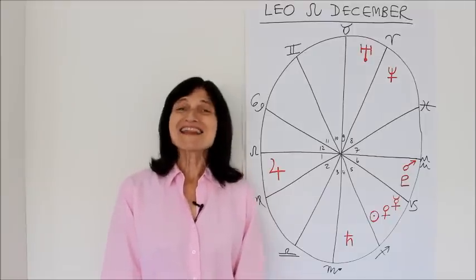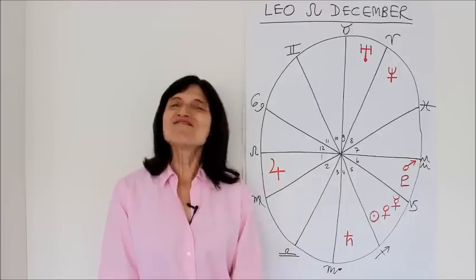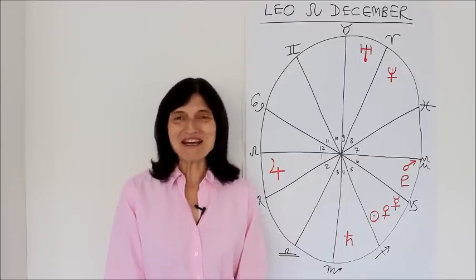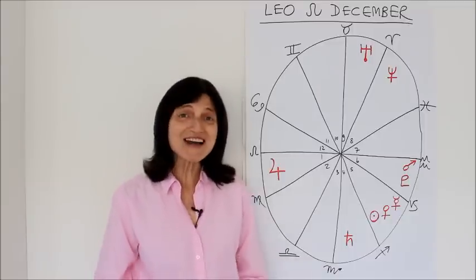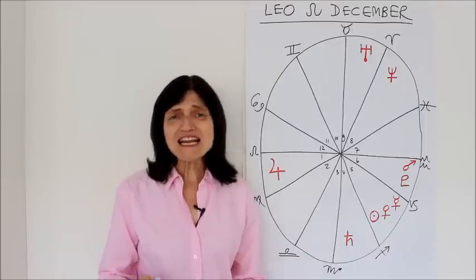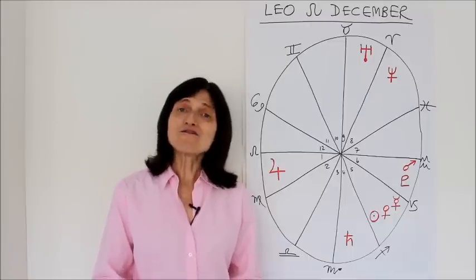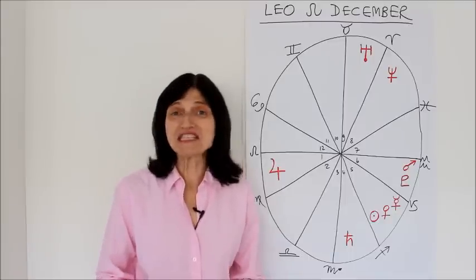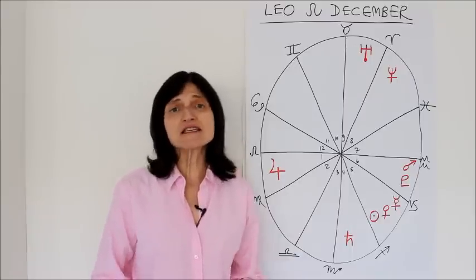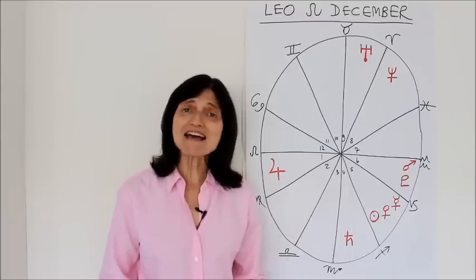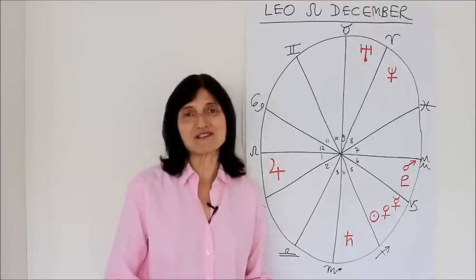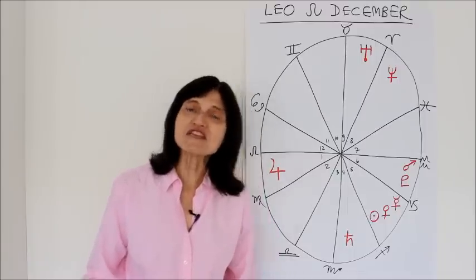Hello Leo. This is your December forecast. So it's a mixed month with a lot happening. We've got some beautiful trines coming up, which I shall of course share with you. We've got an exact square of Uranus and Pluto once again on the 15th. And towards the end of the month, we've got a very significant change, which is that Saturn moves out of Scorpio and into Sagittarius for about the next three years.